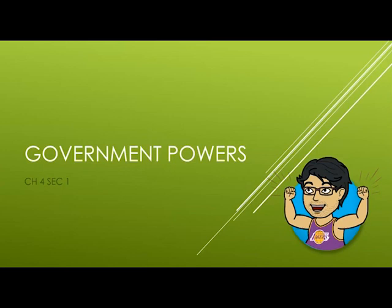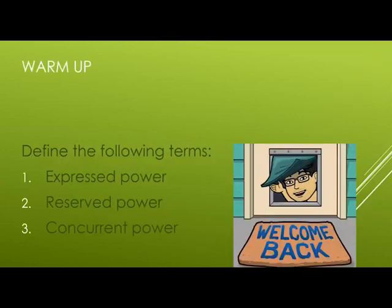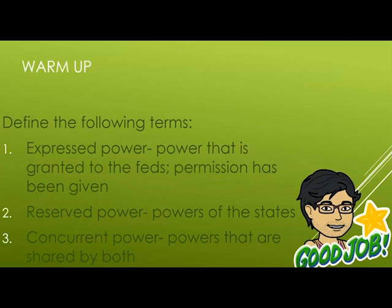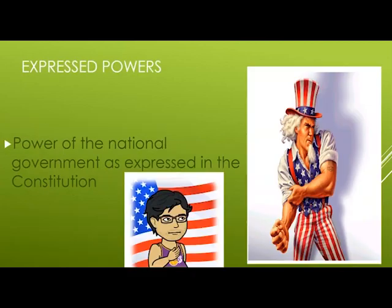Your warm-up question: define the following terms — express power, reserve power, and concurrent power. Those are some that you should have picked up from Thursday's lesson when you guys were looking in your textbook. Express powers are powers that are granted and given to the federal government — this is permission that has to be given. Reserve power is a power that belongs with the states. Concurrent powers are powers that are shared by both the state and the federal government.